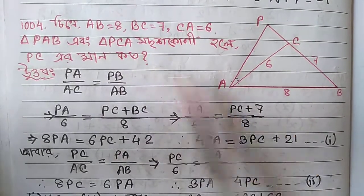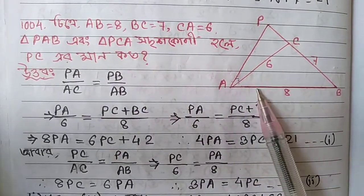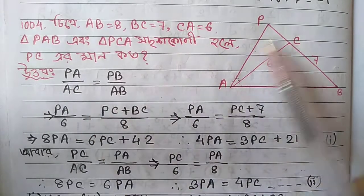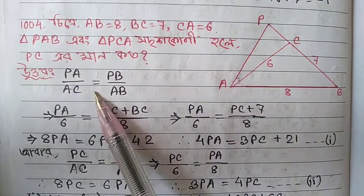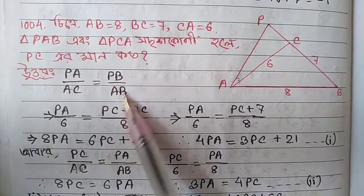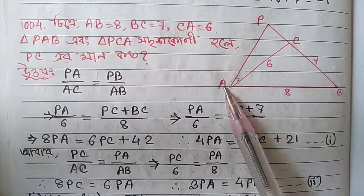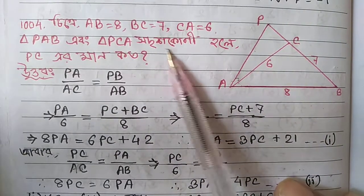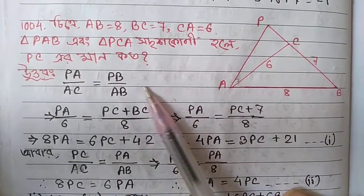These similar triangles — their corresponding side ratios are equal, meaning PA divided by something equals PA divided by AB. The corresponding ratios of the triangles give us PA over AB.